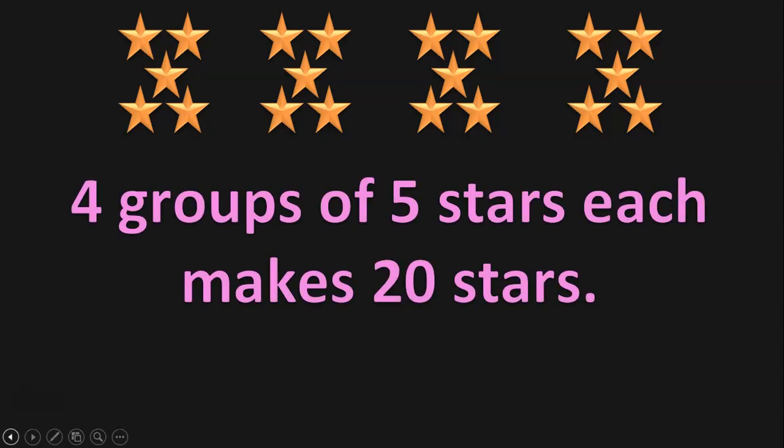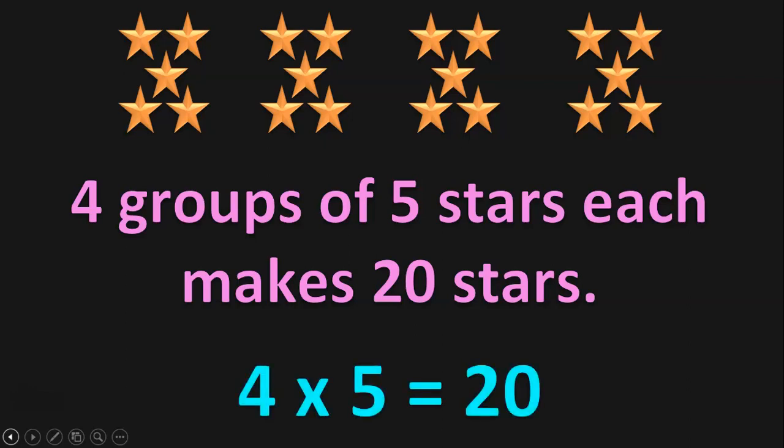Let us take another situation where you have five stars in one group, another five stars in the second group, another five stars in the third group, and another five stars in the fourth group. There are four groups of five stars in each of them. The total number of stars: 5 plus 5 is 10, 10 plus 5 is 15, 15 plus 5 is 20. Four groups of five stars makes 20 stars, and the multiplication statement will be 4 into 5 is equal to 20.